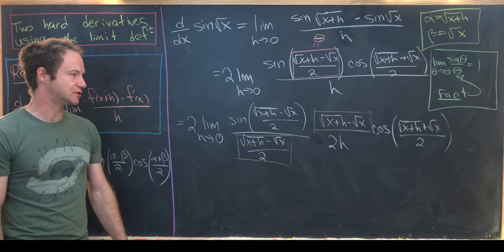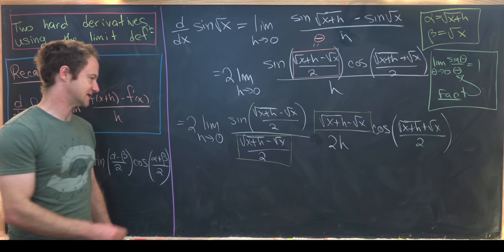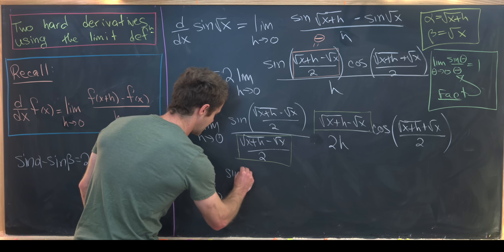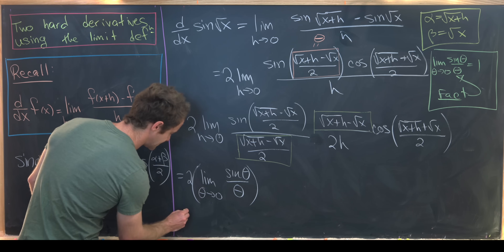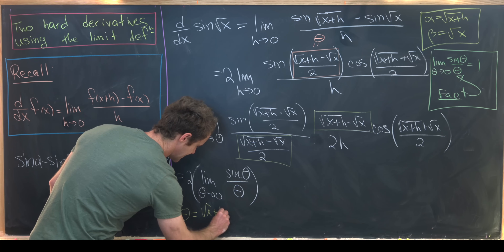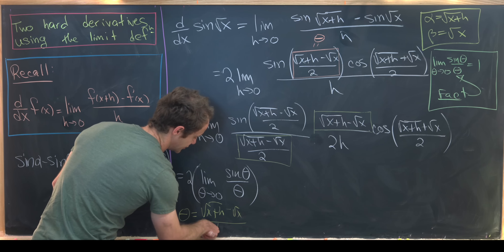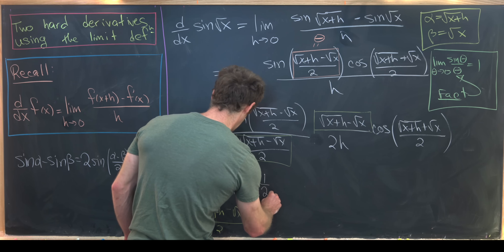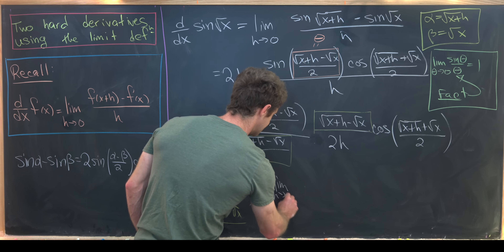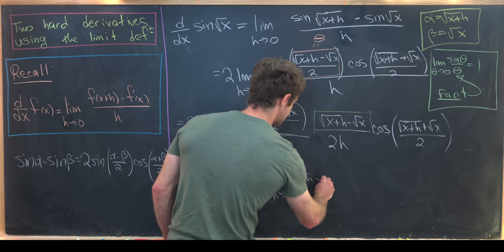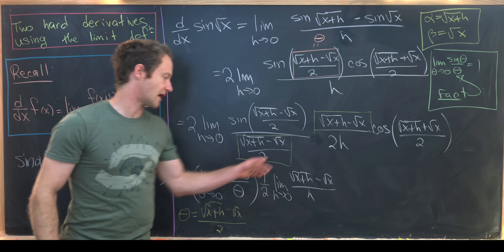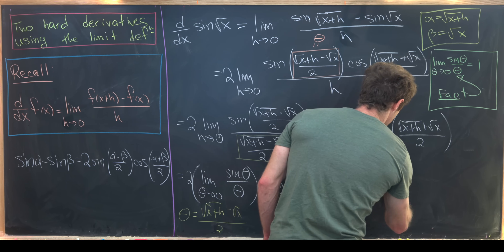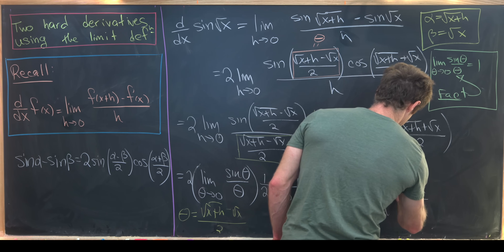We can split this into a product of limits — and we can only do that because all these limits exist. This becomes: two times the limit as θ→0 of sin(θ)/θ, where θ = (√(x+h)−√x)/2, times one-half times the limit as h→0 of (√(x+h)−√x)/h, times the limit as h→0 of cosine((√(x+h)+√x)/2).